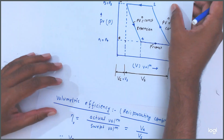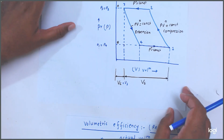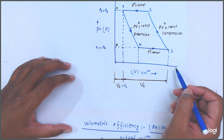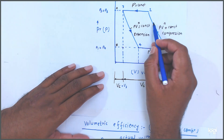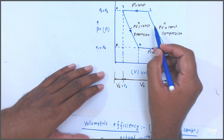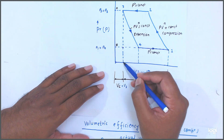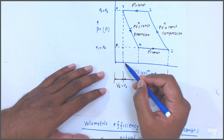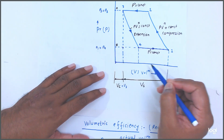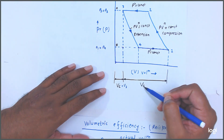See here, in this graph drawn between pressure and volume. This diagram is for a single stage reciprocating compressor with clearance volume. So this is the clearance volume — this much is the clearance volume, denoted by Vc. And this is the swept volume, denoted by Vs.